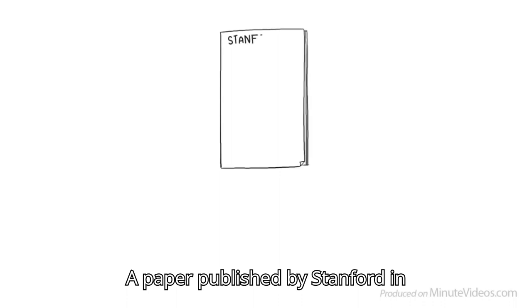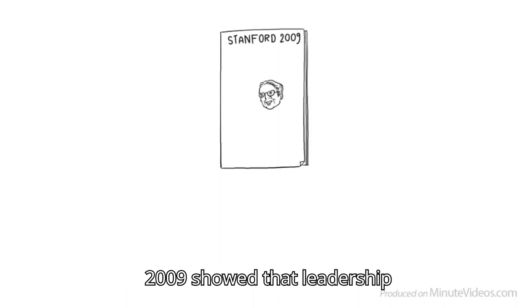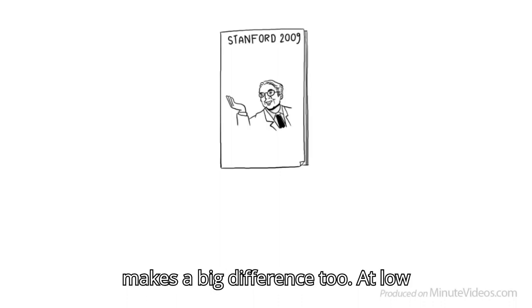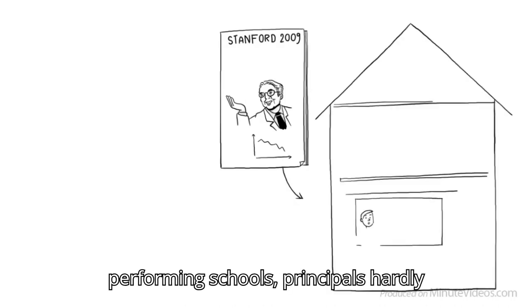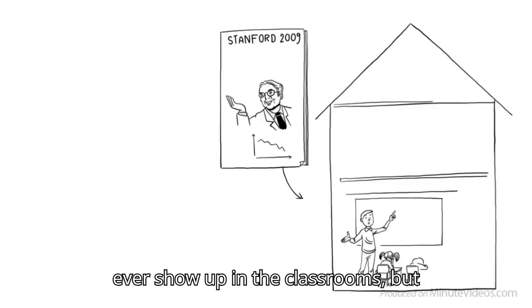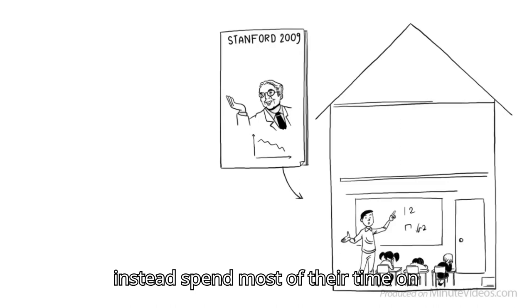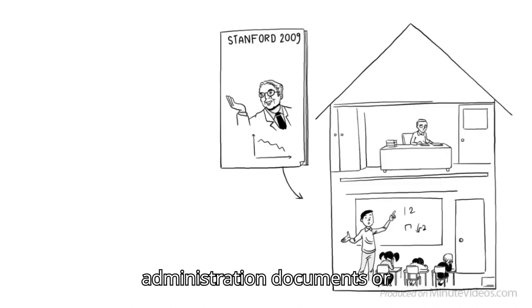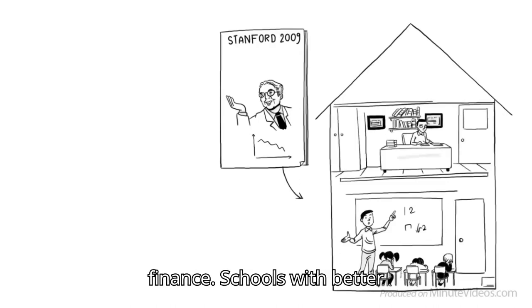A paper published by Stanford in 2009 showed that leadership makes a big difference too. At low-performing schools, principals hardly ever show up in the classrooms, but instead spend most of their time on administration, documents, or finance.